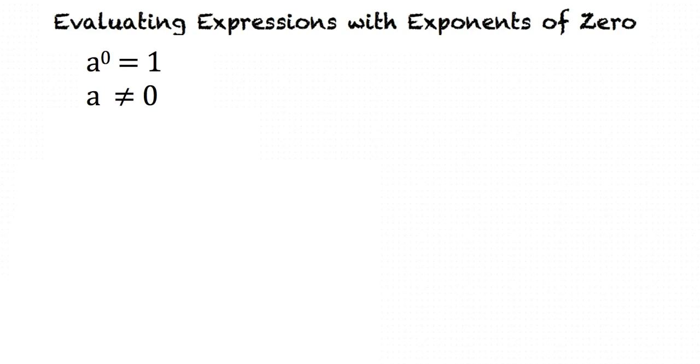We can think of this a number of other ways. One way is to pretend we don't know what a number to the zero power is and try to get a pattern. Let's take 2 for example.